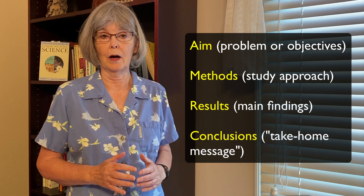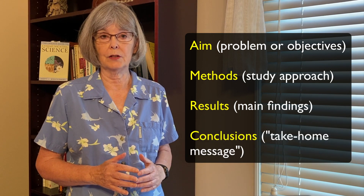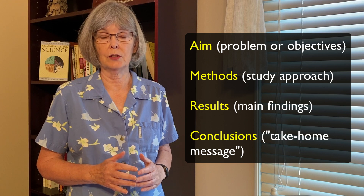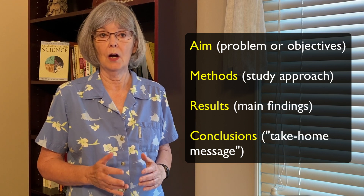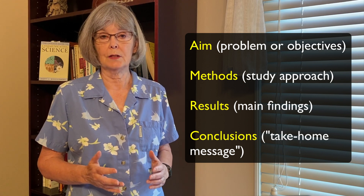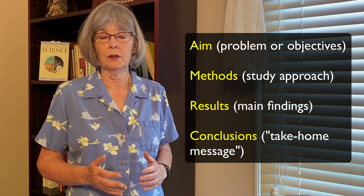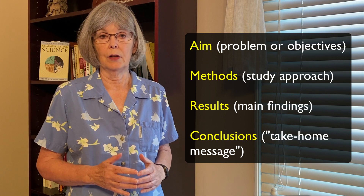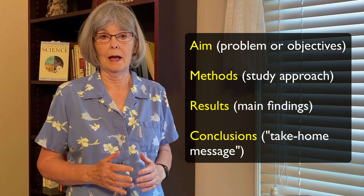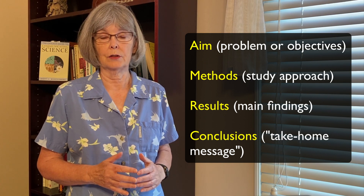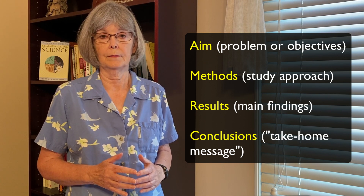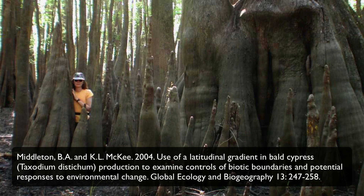Some journals require other information such as location of the study or species studied. Let's look at each component using an example from the literature. In this study, we examined how production of bald cypress swamps varied with latitude.